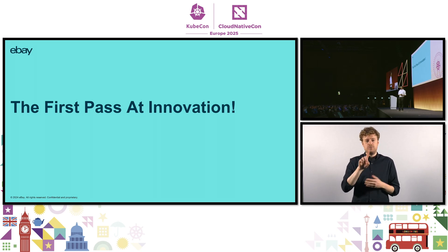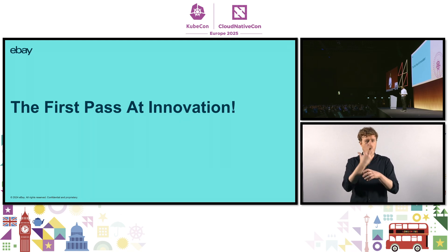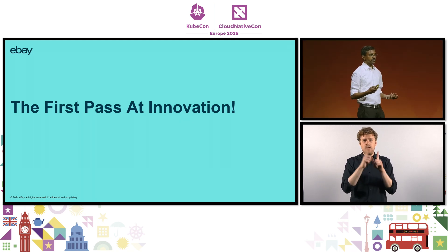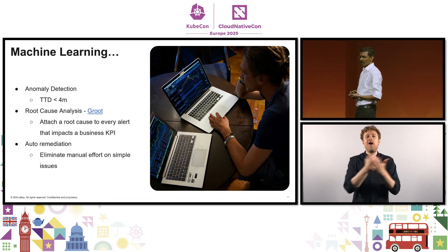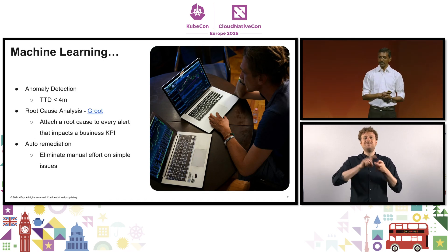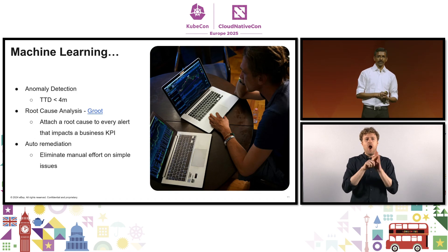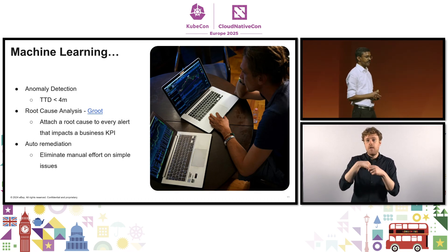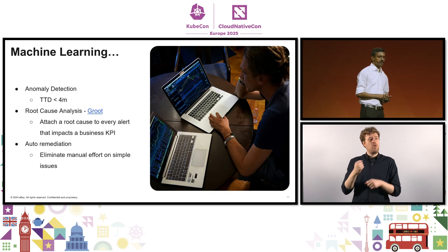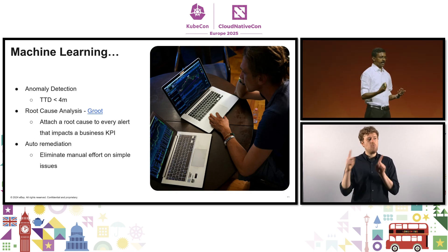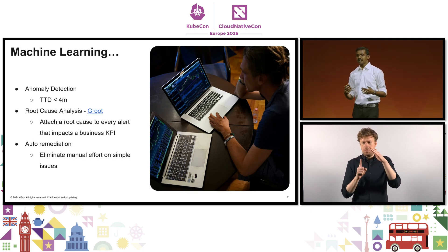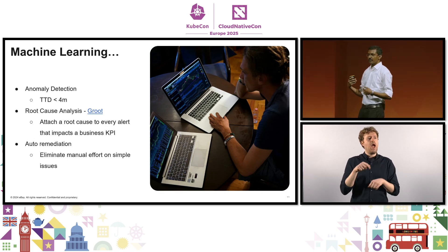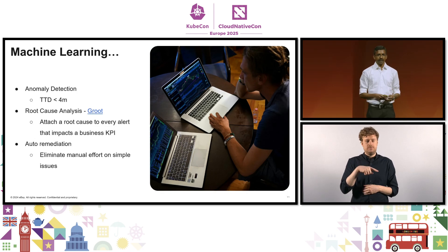At a time where we were relying on static threshold-based alerts or manually eyeballing things as they fall off a cliff, there was a first pass at innovation — machine learning. Shout out to my partner in crime, Huai Jiang in Shanghai, who spearheaded a lot of this. We first tried to reduce the time to detect to under four minutes using anomaly detection. We built something called Groot — available as a white paper online — which can attach a root cause to every alert triggered off of a business KPI. And we did simple auto-remediation: if you identify a bad pod as an outlier, maybe bounce the pod.